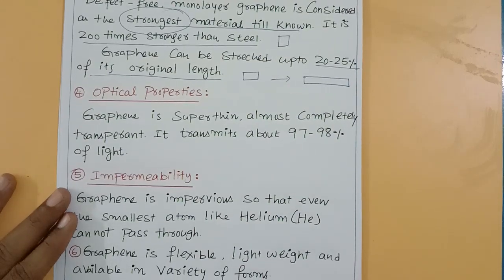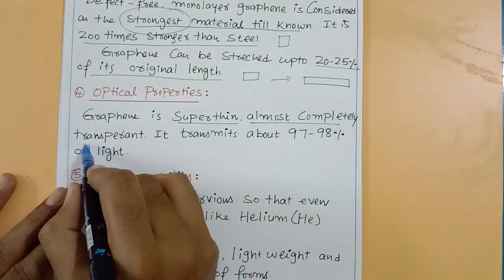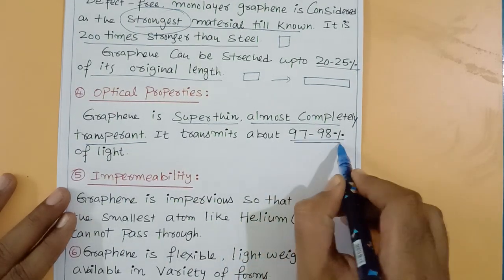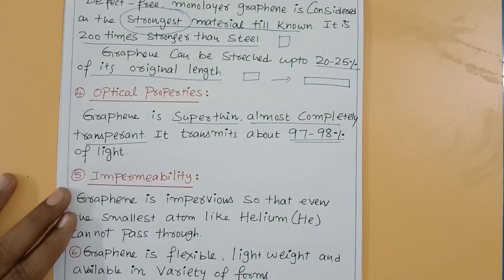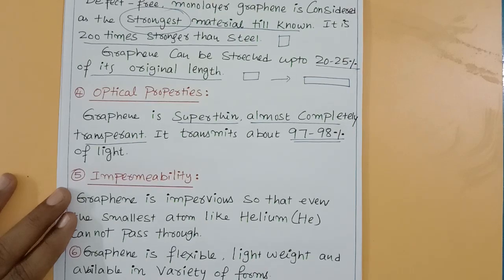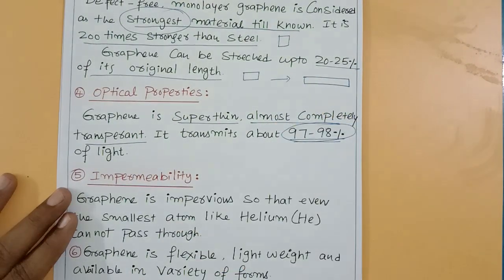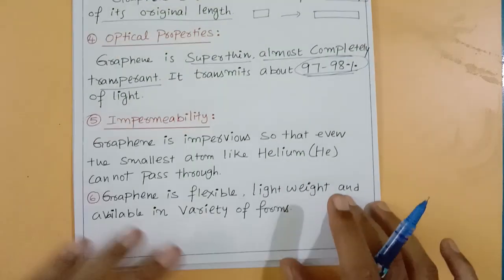Optical properties: graphene is super thin and almost completely transparent. It transmits 97–98% of light and does not absorb much, making graphene a very transparent material. It does not absorb much light, so it does not appear black.